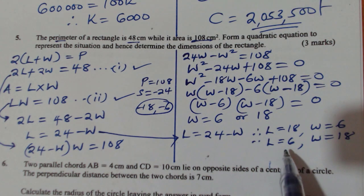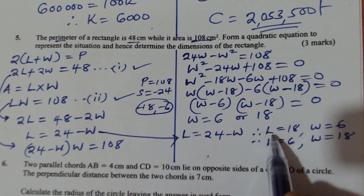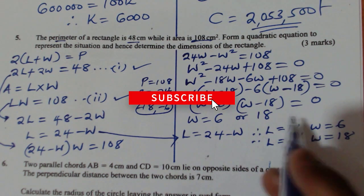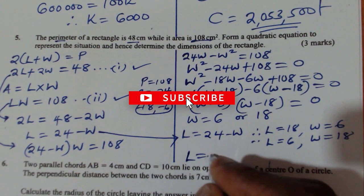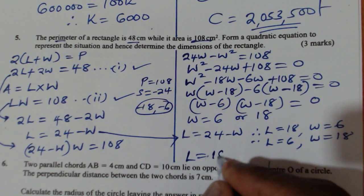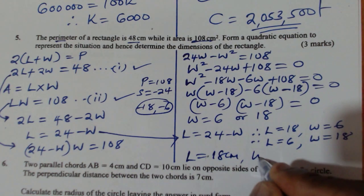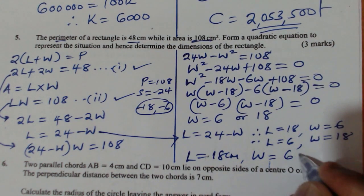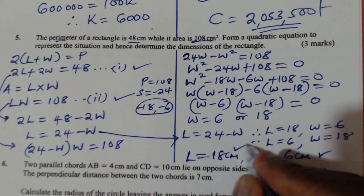Which one are you going to take? Bearing in mind that a rectangle has length longer than the width, automatically you take this one. L equals 18 centimeters, and the width will be 6 centimeters. So those are the dimensions.